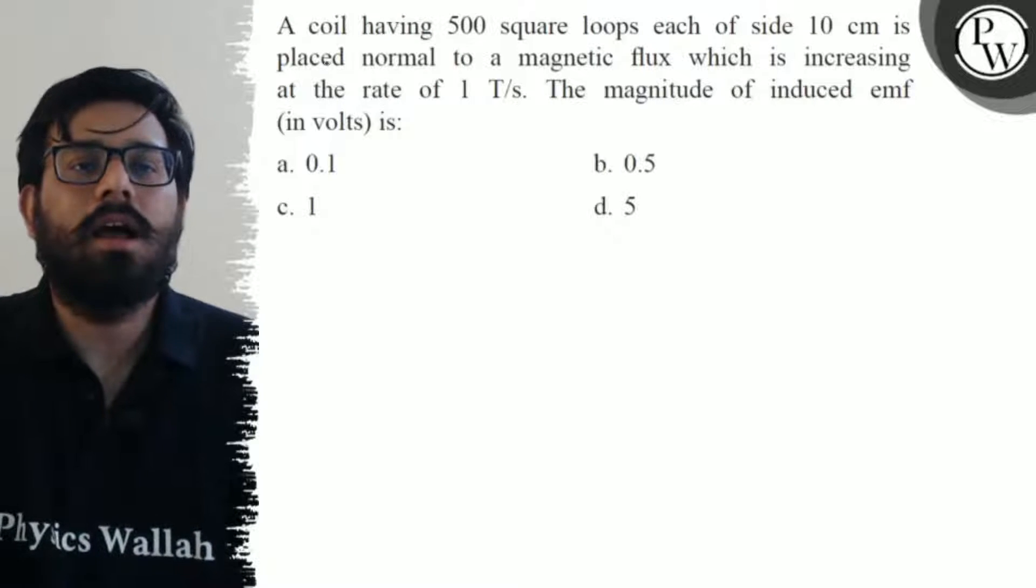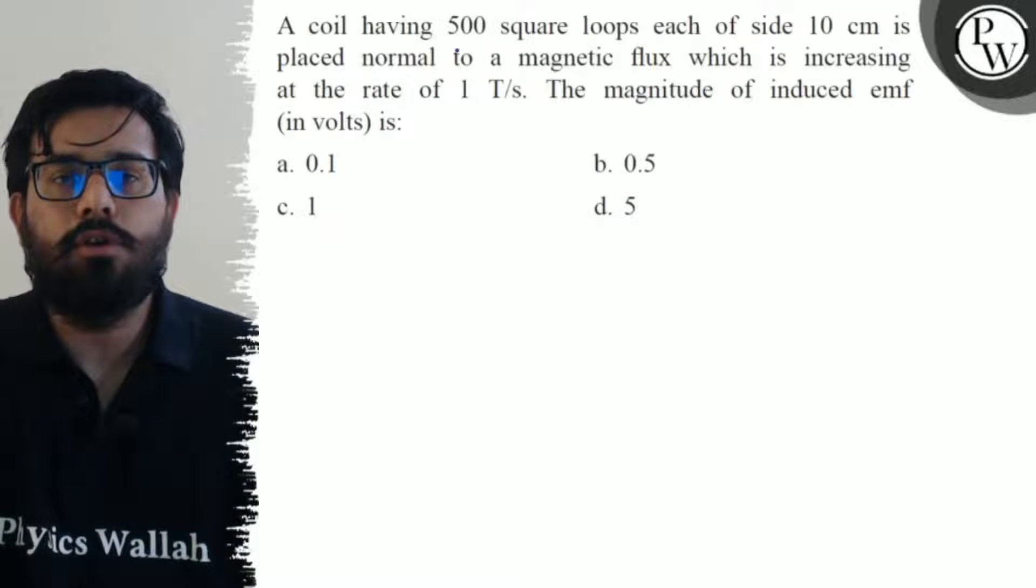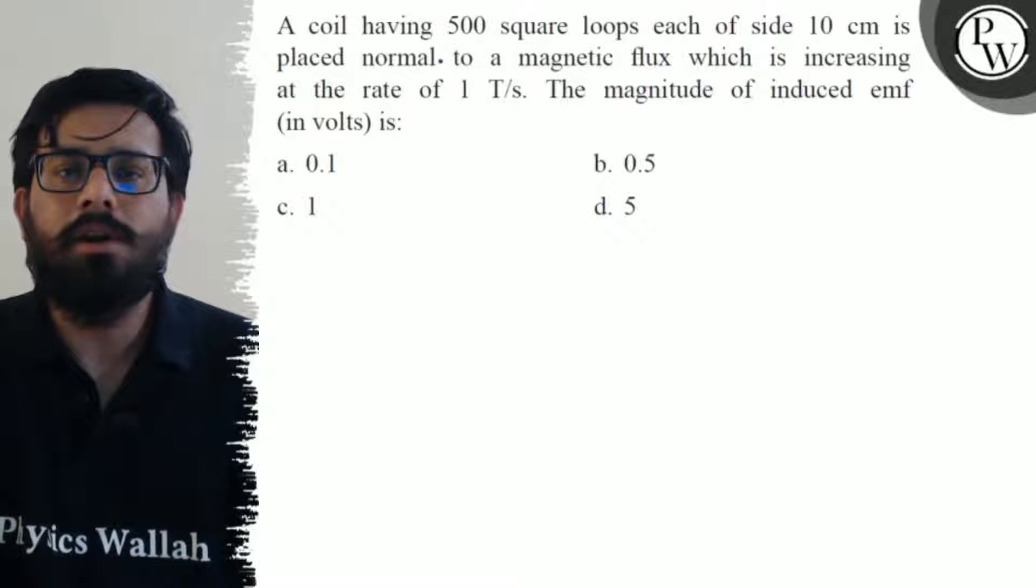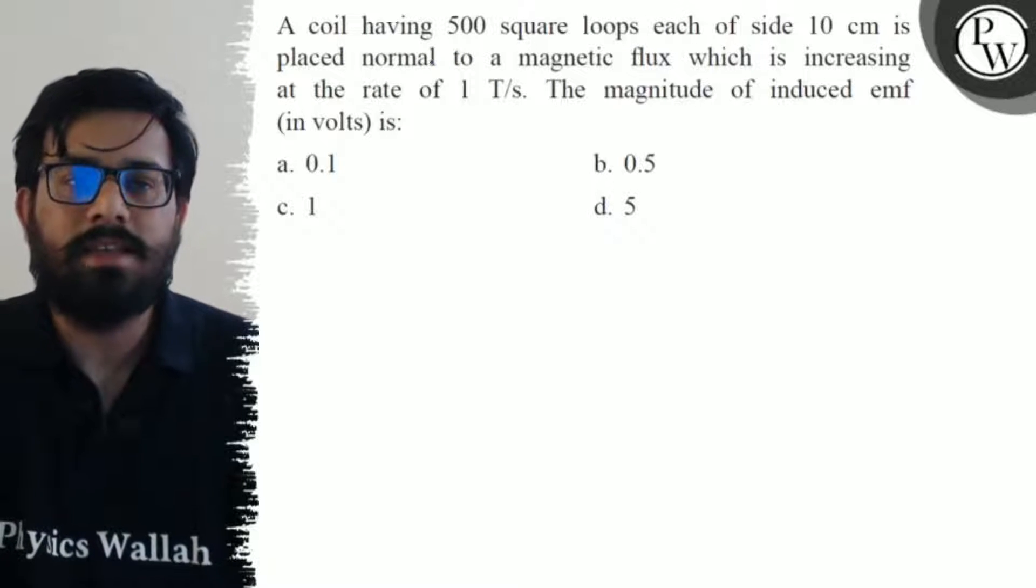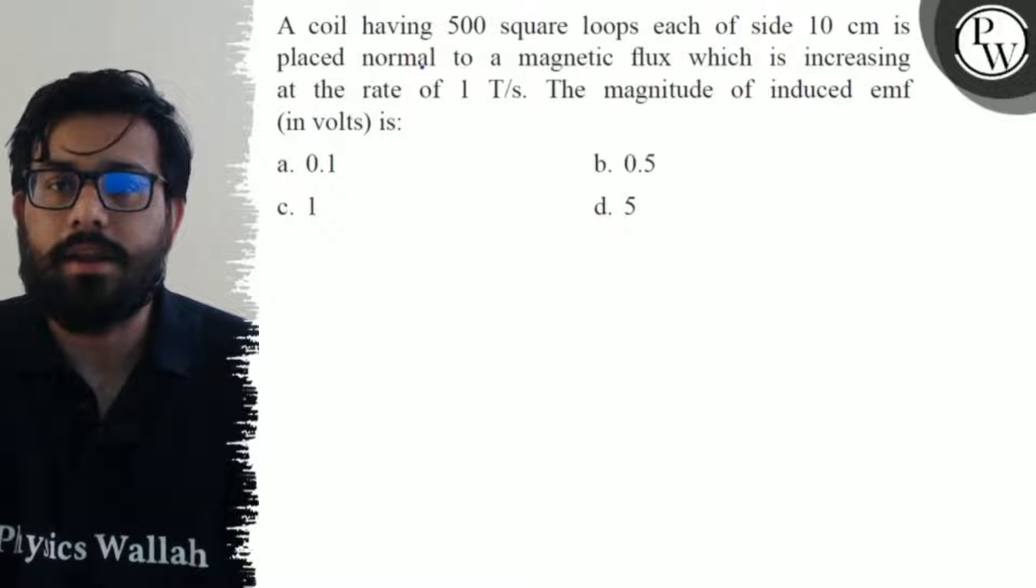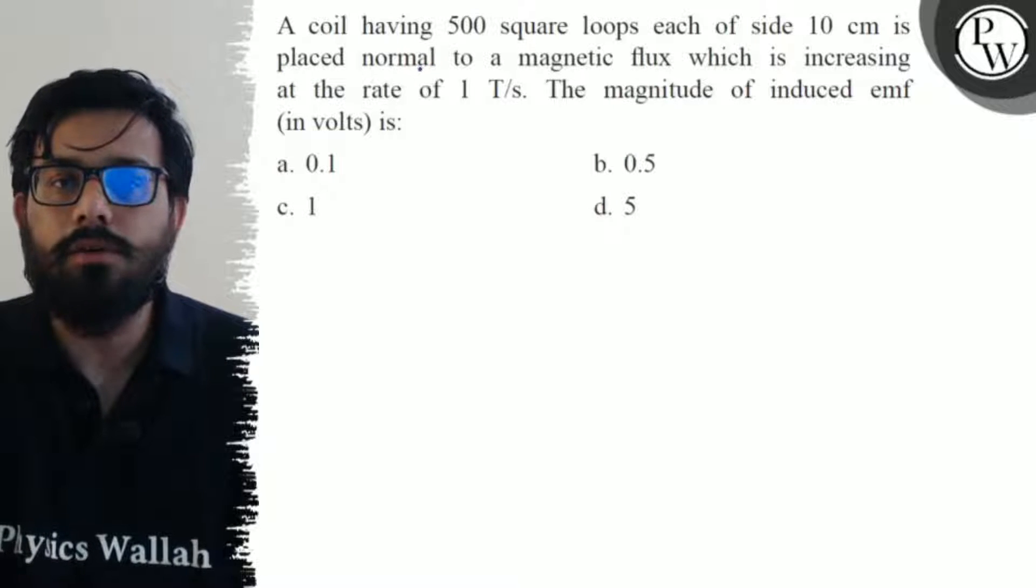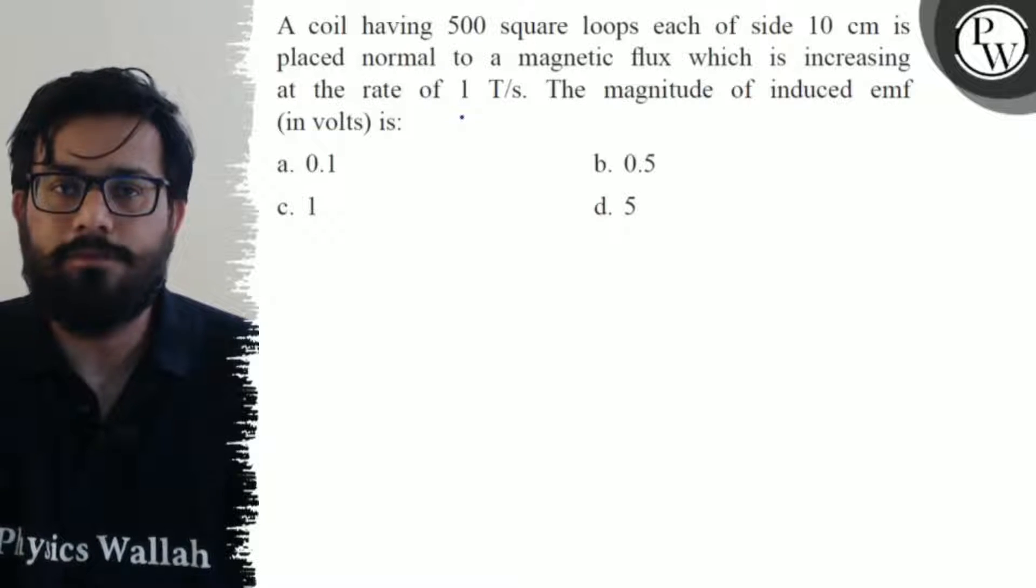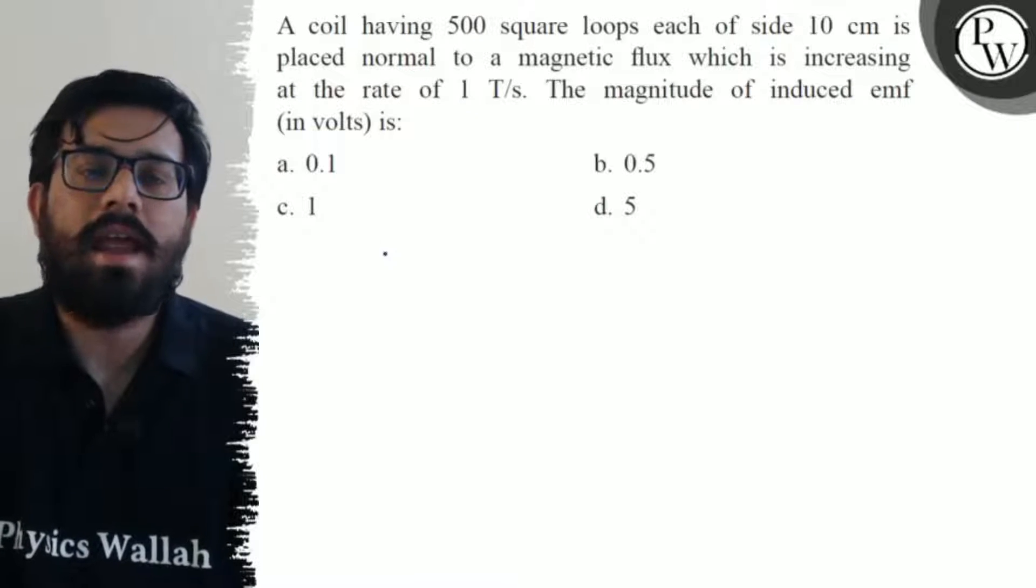Let's see the question. A coil having 500 square loops, each of side 10 centimeters, is placed normal to a magnetic flux which is increasing at a rate of 1 tesla per second. The magnitude of induced EMF in volts is: option a) 0.1, option b) 0.5, option c) 1, and option d) 5.